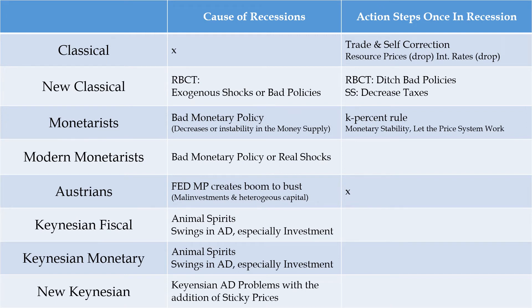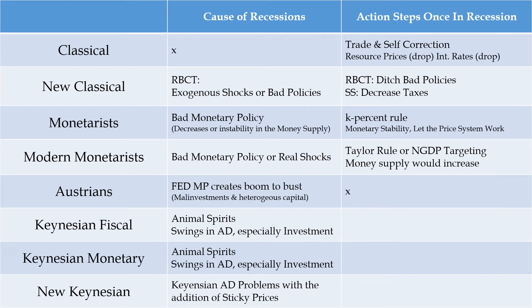The monetarist solution to bad monetary policy — the original Friedman K percent rule is an example — creates monetary stability and allows the price system to work. It allows the economy to self-correct and lets entrepreneurs and investors make decisions about the future that create wealth and allow the economy to get back on track. The modern monetarists suggest something similar to a K percent rule, but here we have the Taylor rule or NGDP targeting. Both approaches follow a rule-based system that allows investors to understand what's going to happen — similar to the original monetarists.